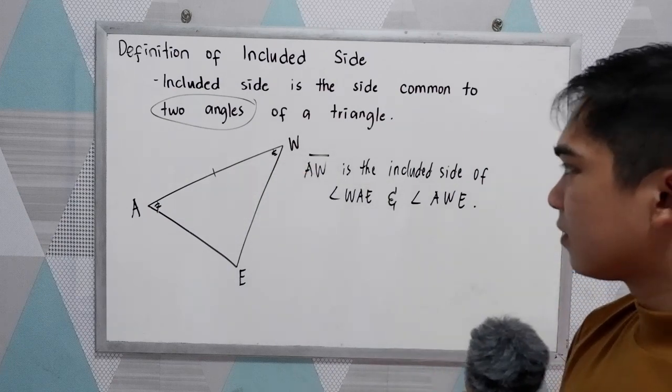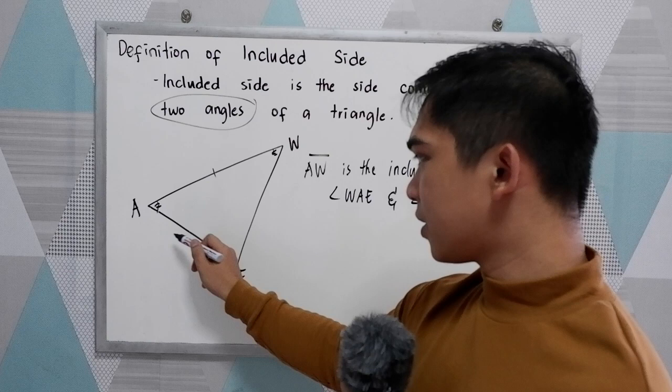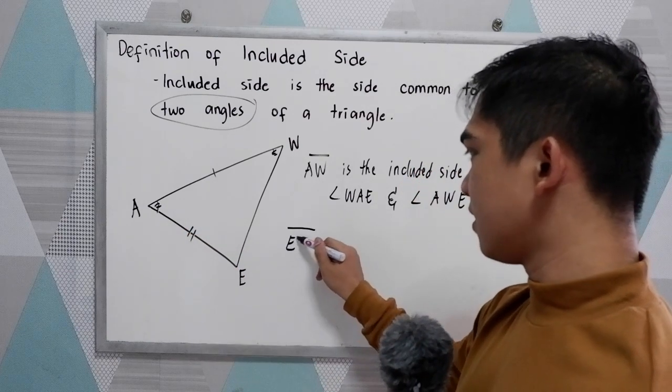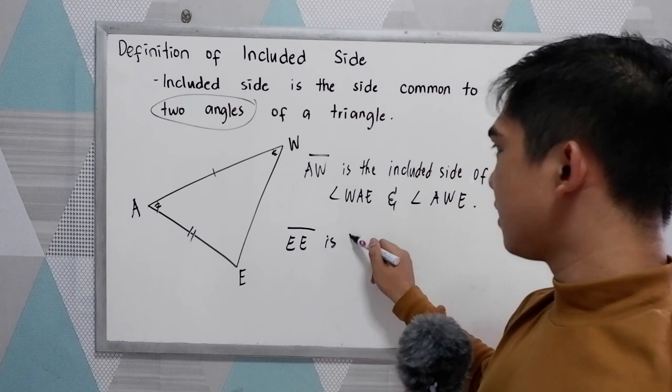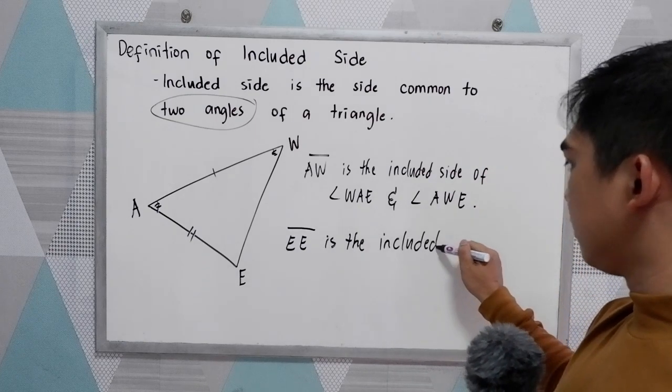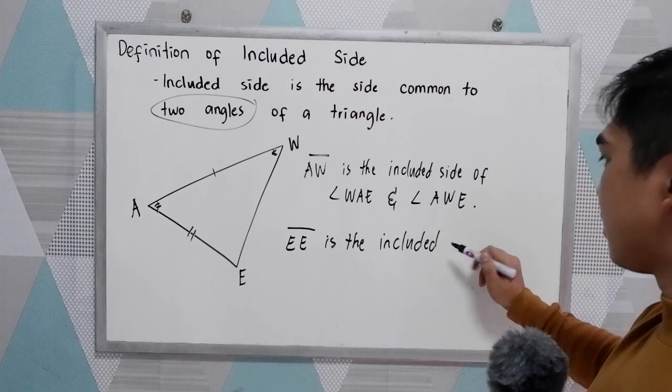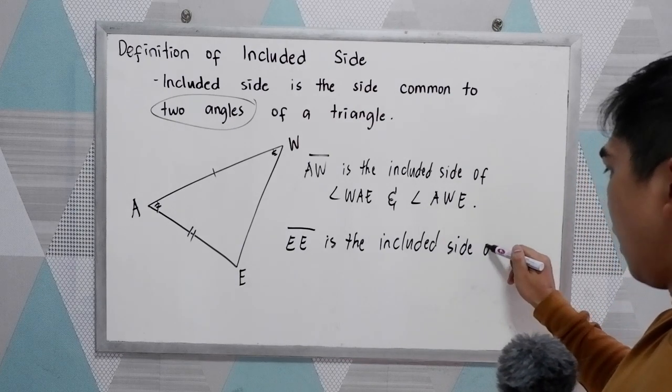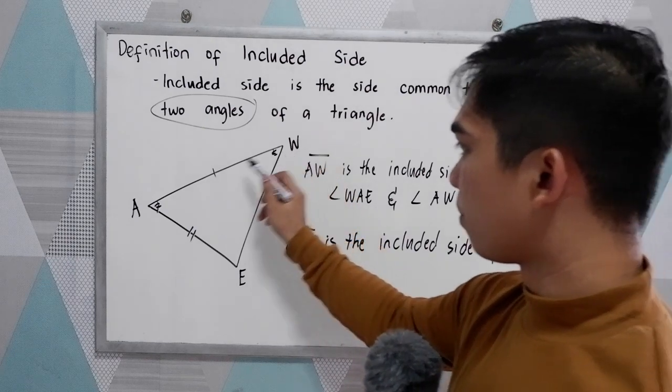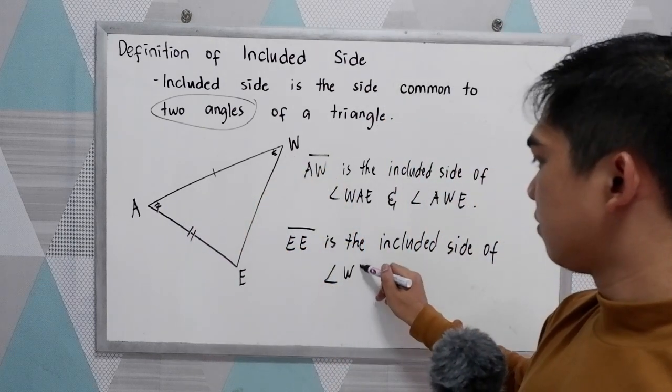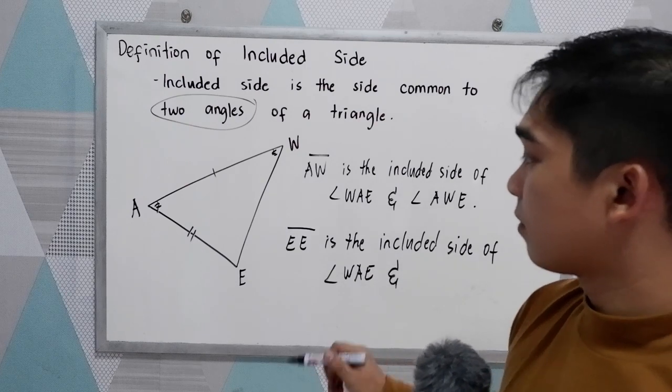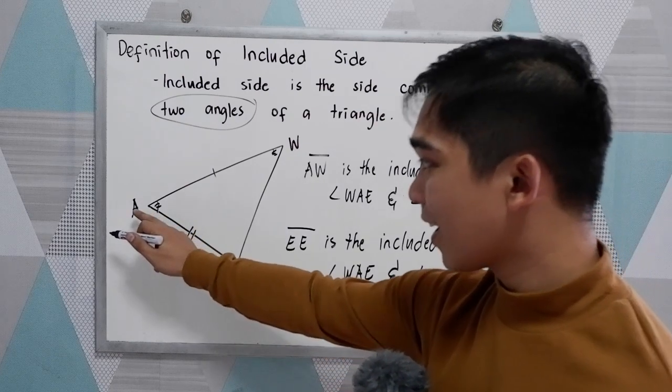Now, let's use side AE. So side AE is the included side of angle WAE and angle AEW.